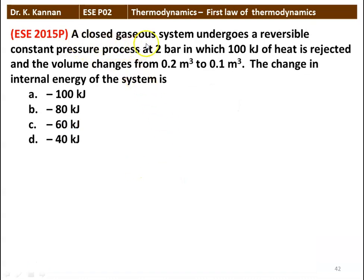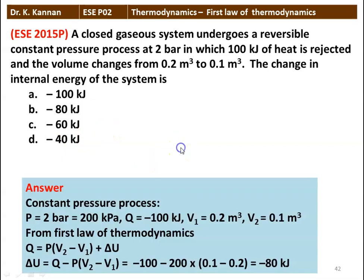Next question: a closed system undergoes a reversible constant pressure process at 2 bar in which 100 kJ of heat is rejected and volume changes from 0.2 m³ to 0.1 m³. The change in internal energy is — minus 100, minus 80, minus 60, or minus 40 kJ? From first law: delta U = Q − P(V2 − V1) = −100 − 200 × (0.1 − 0.2) = −100 + 20 = minus 80 kilojoules.